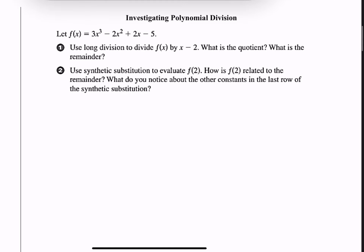Now let's do a little investigation of polynomial division. First, we'll use long division to divide f(x) — our cubic polynomial 3x³ − 2x² + 2x − 5 — by x − 2. Every term is accounted for: degree 3, 2, 1, 0. On the outside, the divisor will be x − 2.